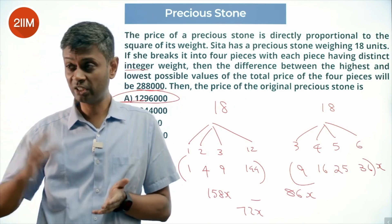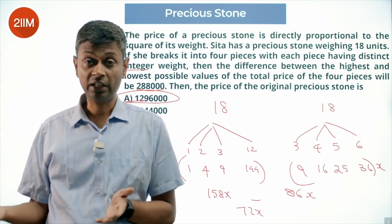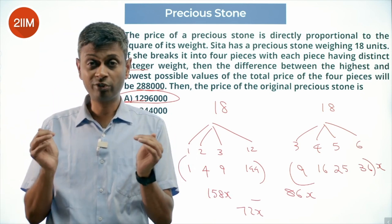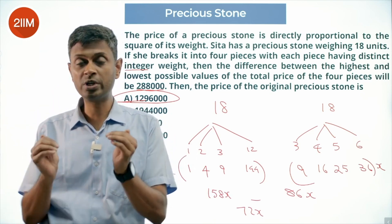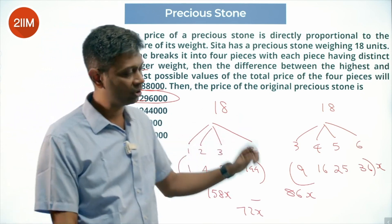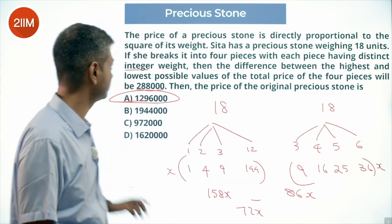One combination is three small pieces and a giant one; the other combination is all four pieces close to each other in weight. Plonk one end, plonk the other end, and then simplify after that.